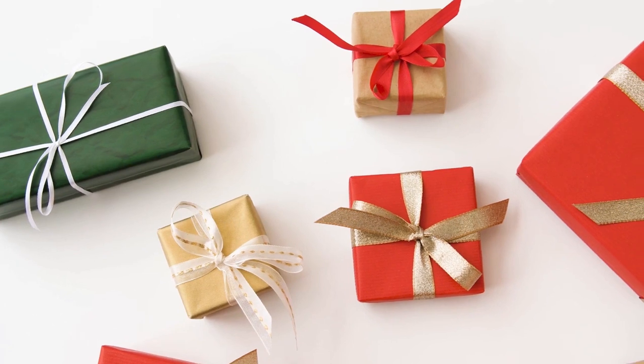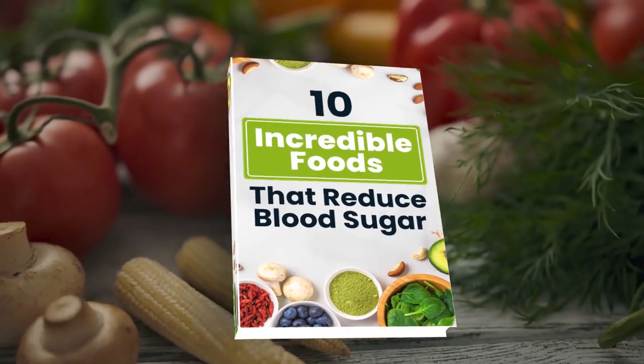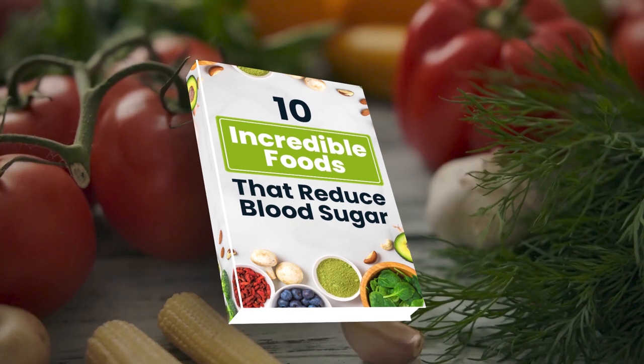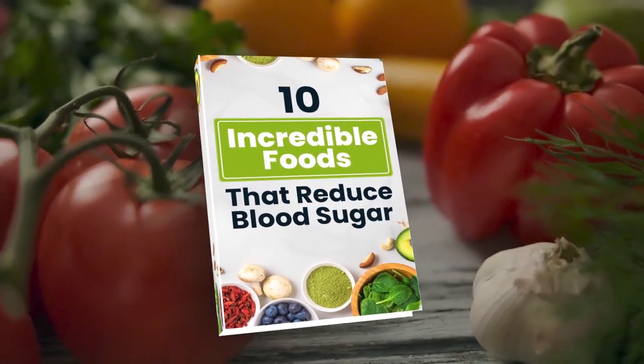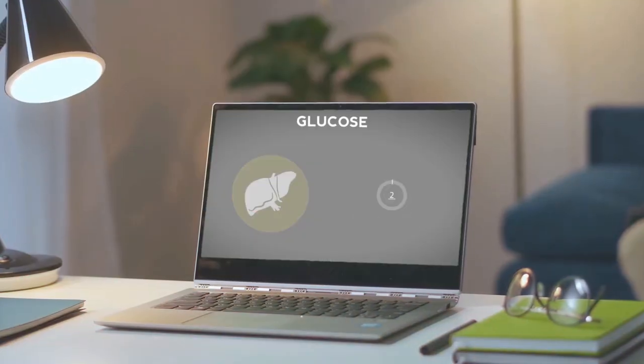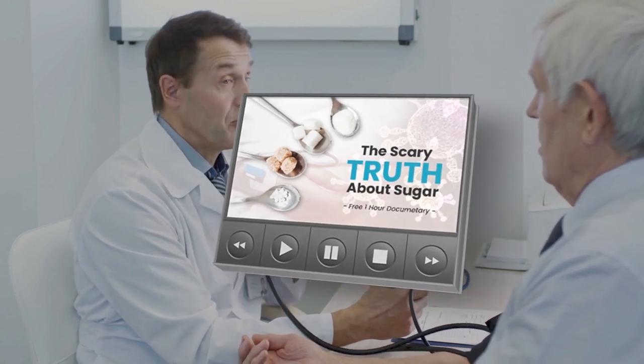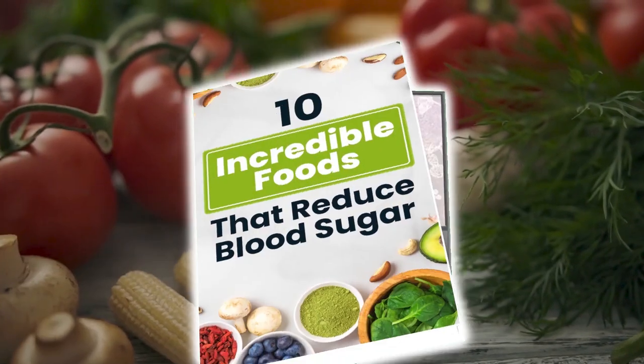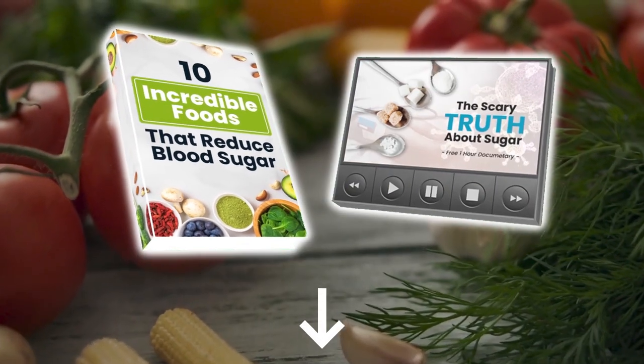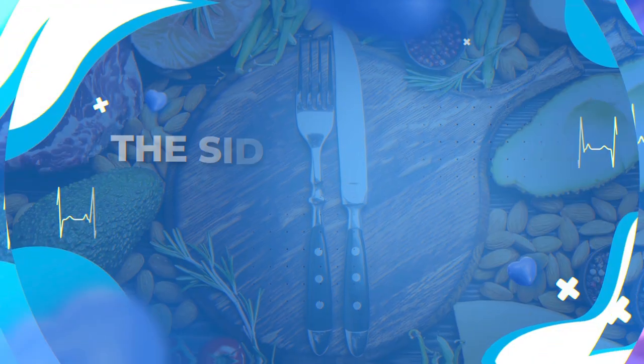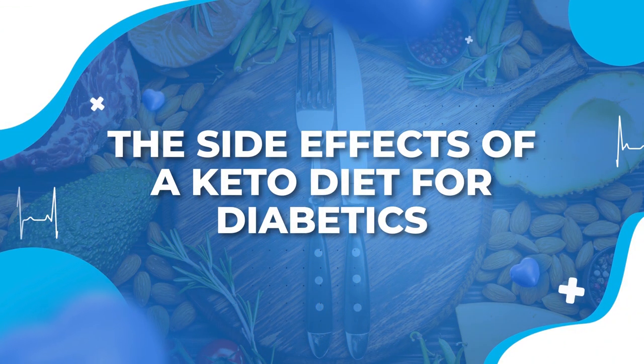But before we dive into those, are you ready for a free gift? Discover an entire world of diabetes-fighting foods with our new book, 10 Incredible Foods That Reduce Blood Sugar. Plus, you'll discover the real reason why type 2 diabetes, obesity, and heart disease are increasing at an alarming rate. And find out what really works when it comes to preventing these illnesses by watching our free one-hour documentary, The Scary Truth About Sugar. Both gifts are free and waiting for you to grab them in the description box below. And now, let's look at the side effects of a keto diet for diabetics.